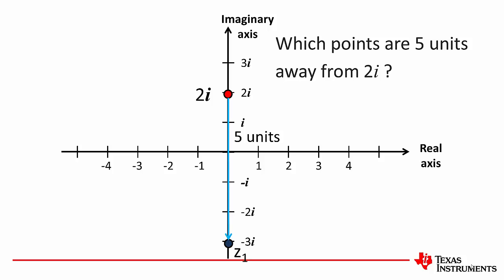Well, there's one on the imaginary axis at minus 3. That's five units away. There's another one at 7, but that's just off my screen. But there would be more solutions. There's some over here between negative 4 and negative 5 on the real axis, and also between 4 and 5 on the real axis.